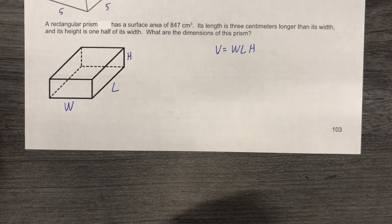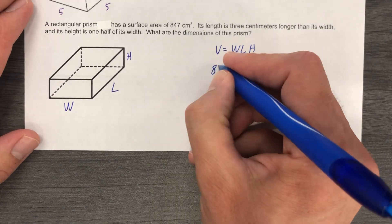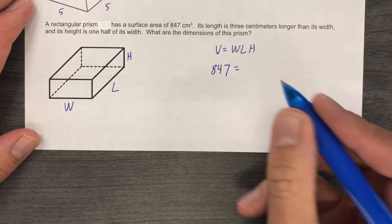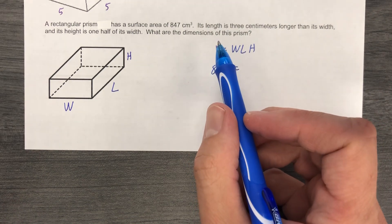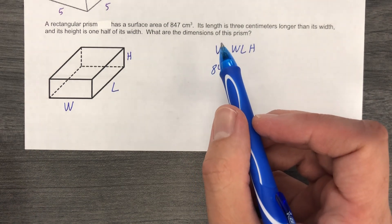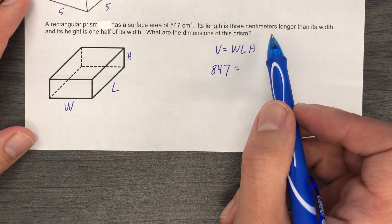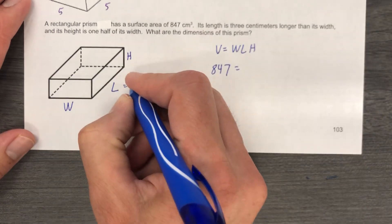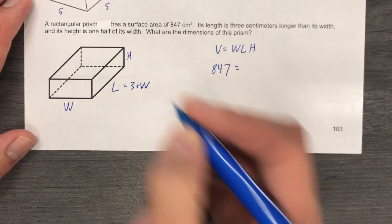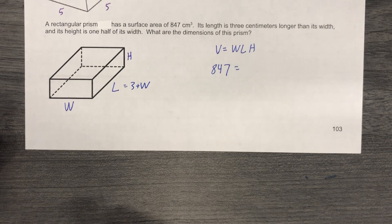Now, as you read this, you're going to realize again that the volume is 847. Now we'll just start reading a little more carefully. It can get overwhelming sometimes, but let's just read carefully. Its length is three centimeters longer than the width. The length is three centimeters longer than the width. You can also call it W plus three instead of three plus W.